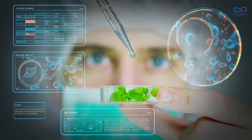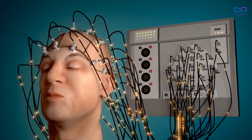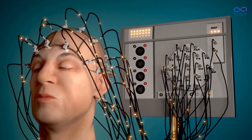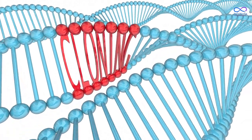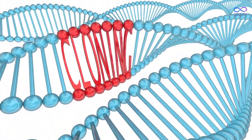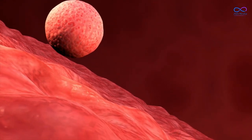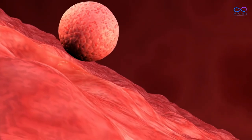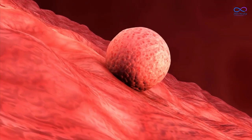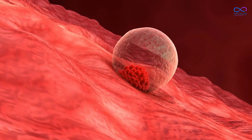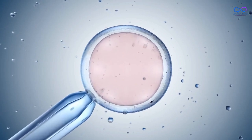Human cloning refers to the creation of genetically identical copies of a human being. There are two main types of human cloning: reproductive cloning and therapeutic cloning. Reproductive cloning involves creating an embryo through cloning techniques and implanting it into a woman's uterus with the goal of producing a live-born individual who is genetically identical to the original donor. This type of cloning aims to create a fully developed human being.